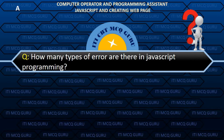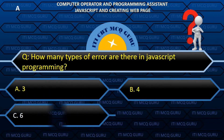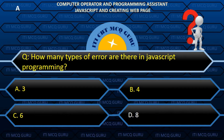How many types of error are there in JavaScript programming? A. Three.